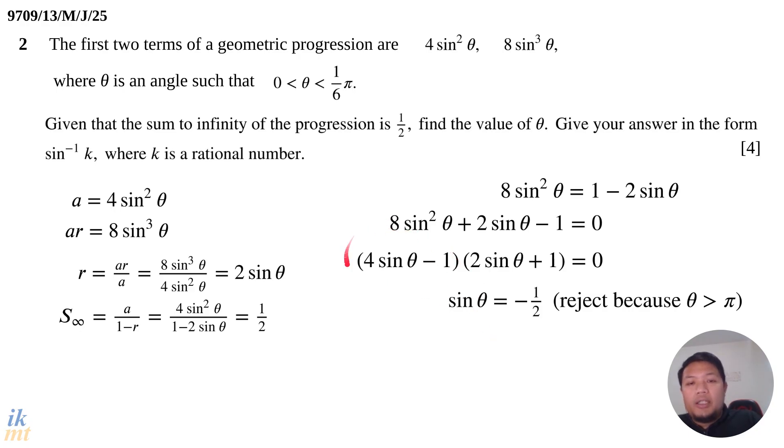From the other factor, we have sin θ = 1/4. Notice that if you know the behavior of the sine function, sin θ is an increasing function between 0 and π/2. That means as θ increases, sin θ also increases.